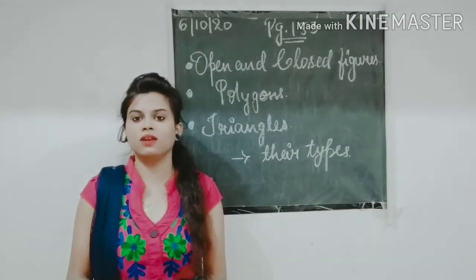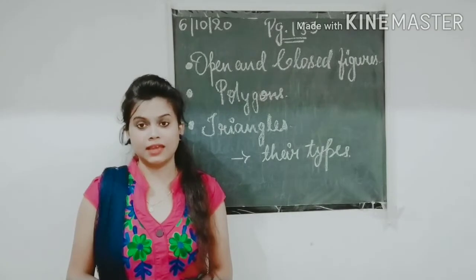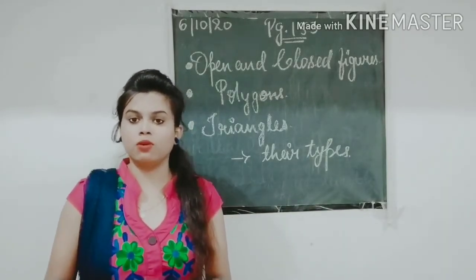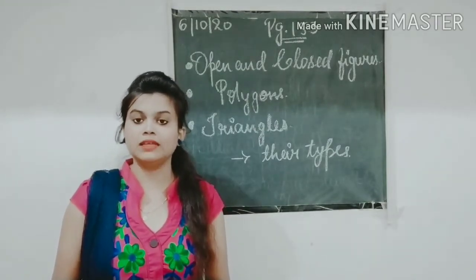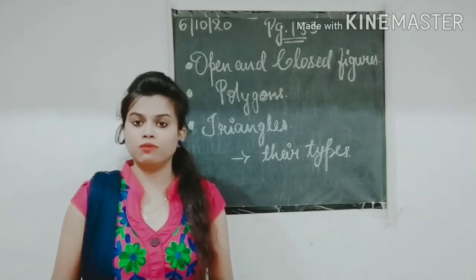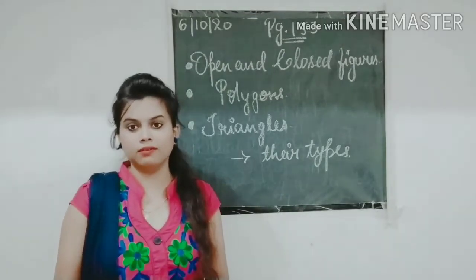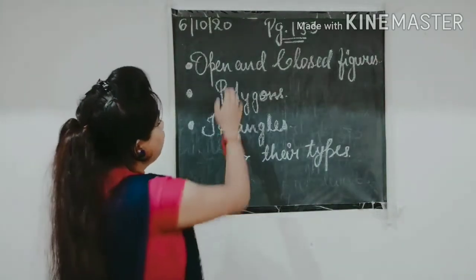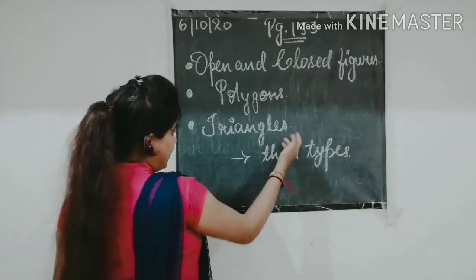Welcome back, dear students. In our online maths class, we are in Unit 9, which is geometry. In the last video, you already saw some basic terms of geometry: line, line segment, point, ray, point of intersection, and angles. In today's video, we are going to learn about open and closed figures, polygons, triangles, and their types.